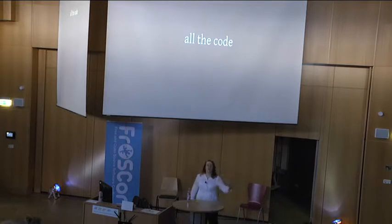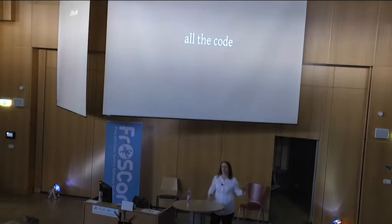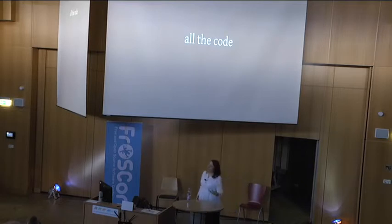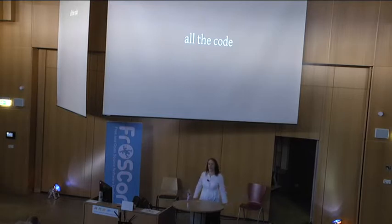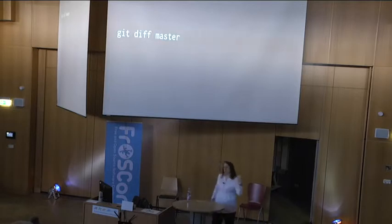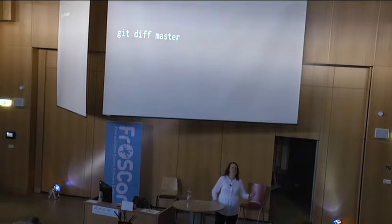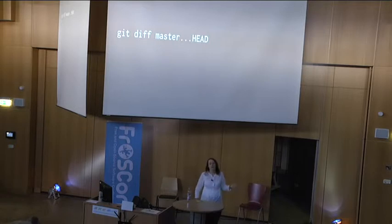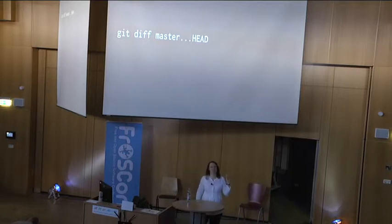Make sure you've got everything you need — all of the code and nothing that shouldn't be there. It's really important to understand what's included. If you're not familiar with your source control system or workflow, talk to the project for help. Check you haven't included anything that shouldn't be there. You can check what's different between your code and master, but remember to use `git diff master...HEAD` — that shows you everything since the last common commit, just the commits on your current feature branch.